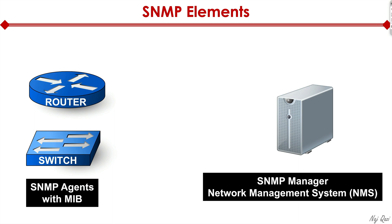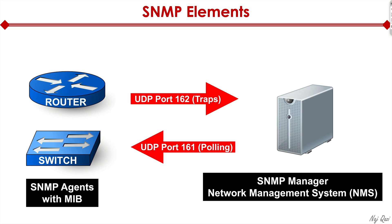The SNMP manager is also called the NMS, or Network Management System. When SNMP agents proactively send information or logs to the SNMP manager, that's considered a trap, and UDP port 162 is used for that. When the SNMP server requests SNMP information to be shared, that's considered polling, and it uses UDP port 161.